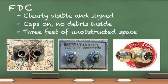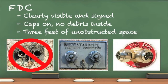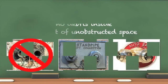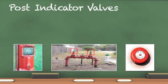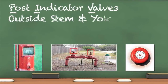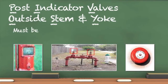The photo on the left shows an obstructed FDC missing its caps. Post indicator valves and outside stem and yoke are indicators that tell if the valve controlling the flow of water to the sprinkler system is open or closed. They must be locked in the open position.